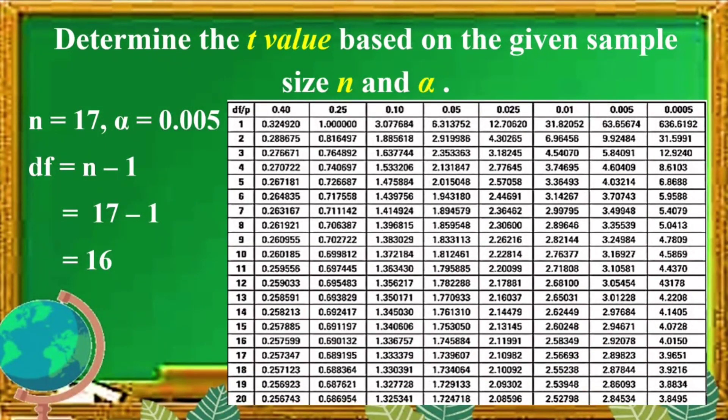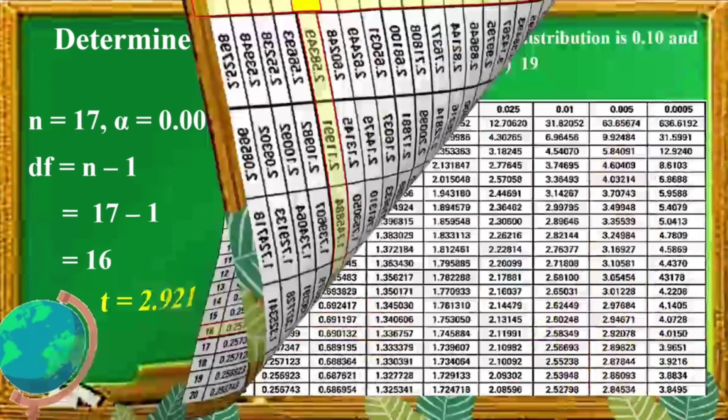So, how to use our table? First, look for the area of the right tail, which is 0.005. There it is. So, this is our 0.005. Next is the degrees of freedom, which is 16. This is our 16. Where they intersect, that is the T value. So, what is the T value? It's 2.92078. Or, we can round it off into 3 decimal places, making it T equals 2.921. So, it's that simple.